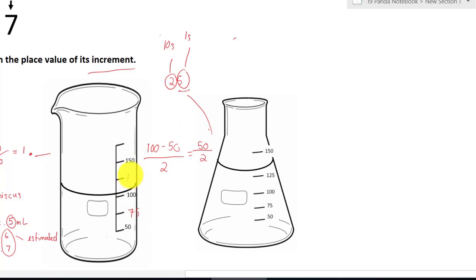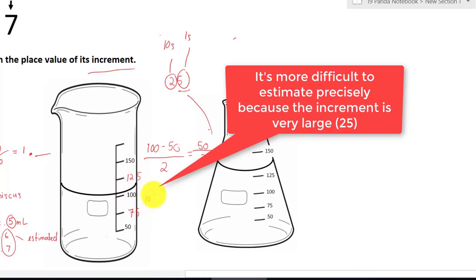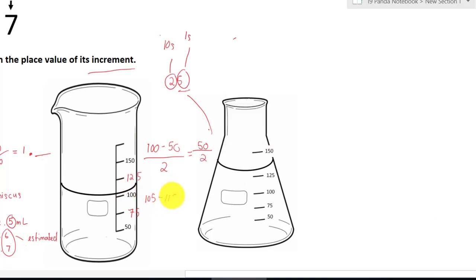100 plus 25 will give us 125. Let's try to figure out what is our measurement on the meniscus. It's going to be 105 to 115 milliliters. Notice the answers are very rough because the value of the increments is very large.